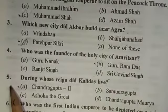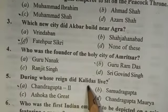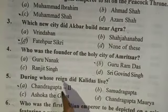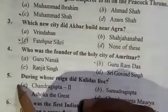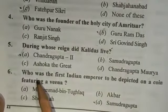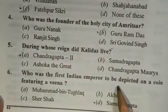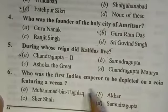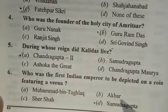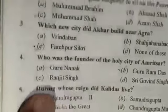Question 5: During whose reign did Kalidasa live? The answer is Chandragupta II. Question 6: Who was the first Indian emperor to be depicted on a coin? The answer is Chandragupta.